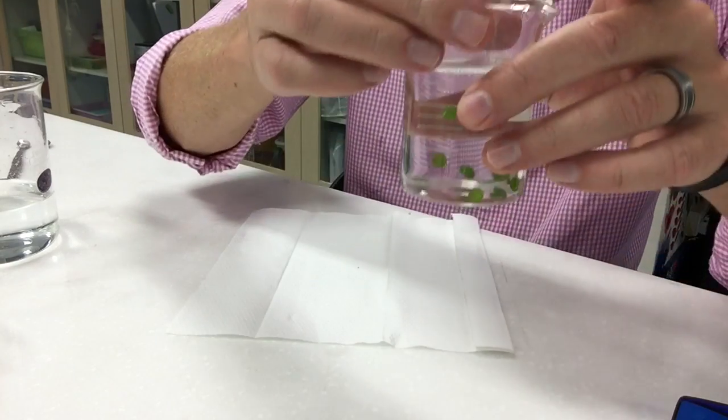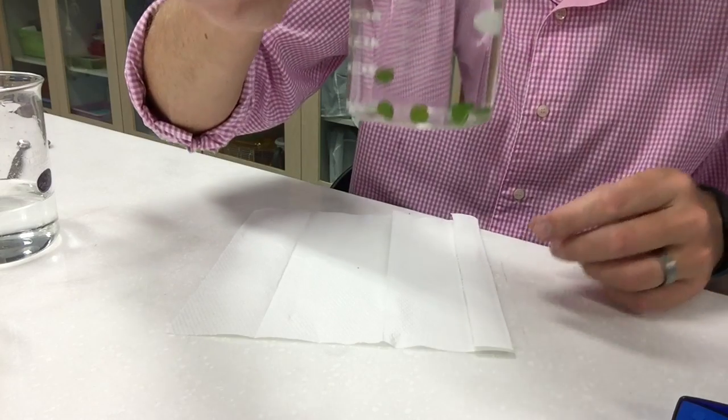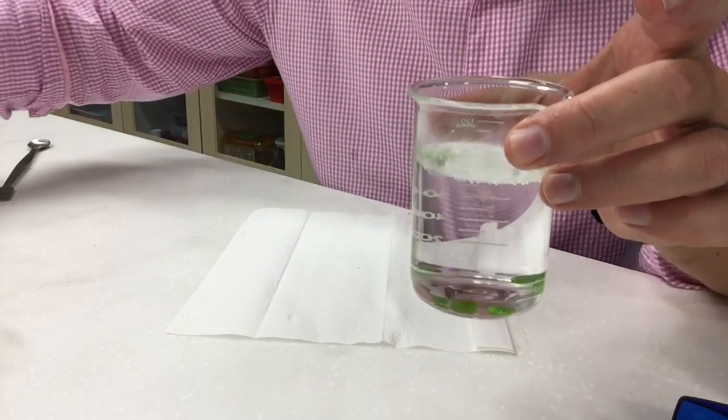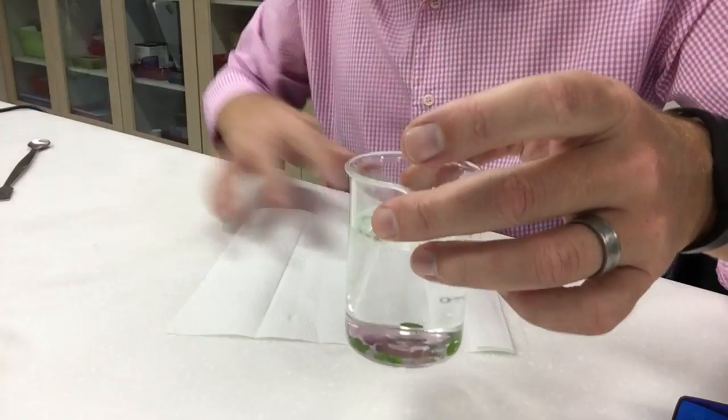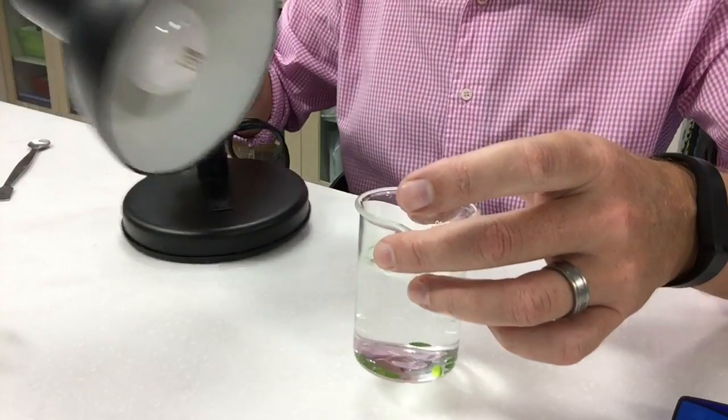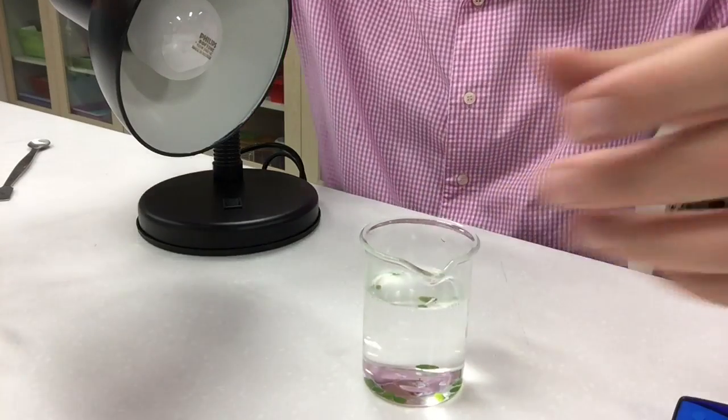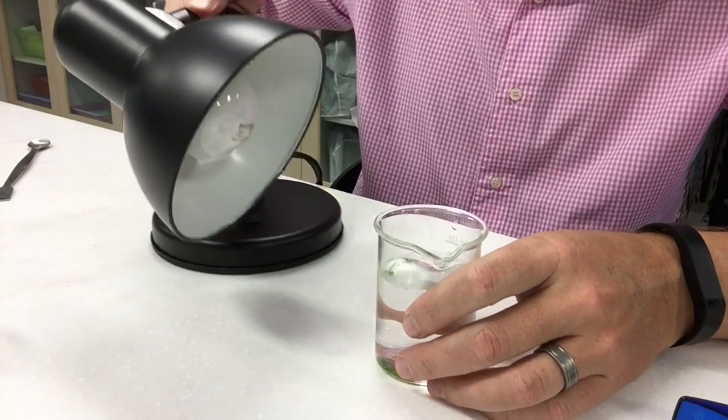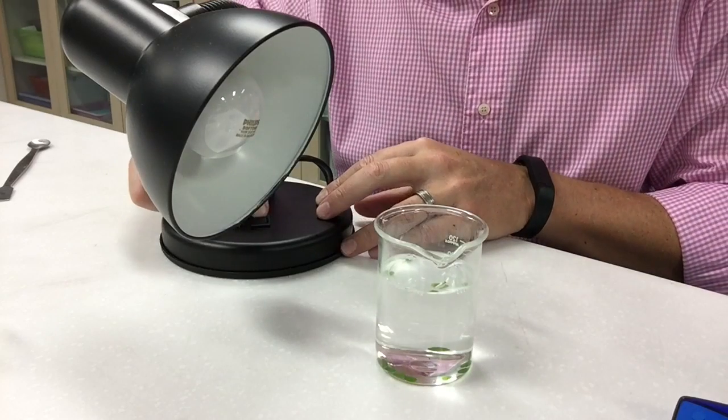Once they've all gone down to the bottom or the most of them have gone down to the bottom, again you don't have to have them all down but those things have sunk down nicely, then what you want to do is set up your lamp and turn it on. Now you're going to want to measure the distance.